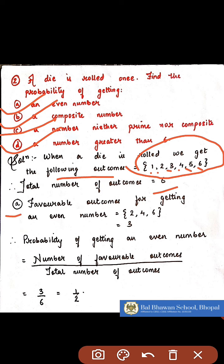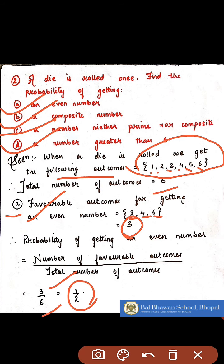In the first condition, they have asked you to find the probability of getting an even number. The favourable outcomes for getting an even number — there are 3 even numbers in the total sample space: 2, 4, and 6. So the favourable outcomes is 3. Therefore, the probability of getting an even number is 3 by 6, which simplifies to 1 by 2.